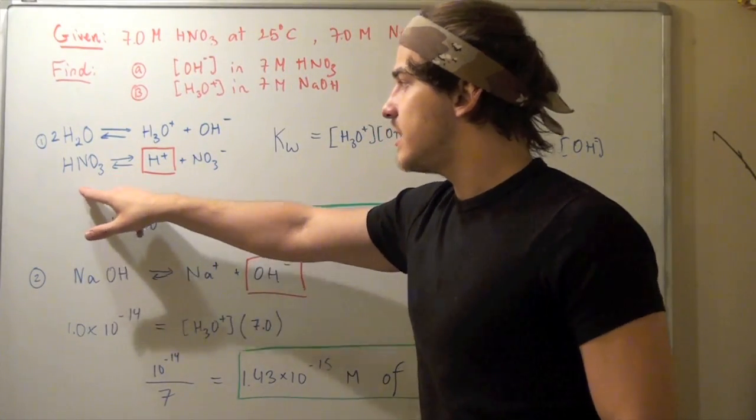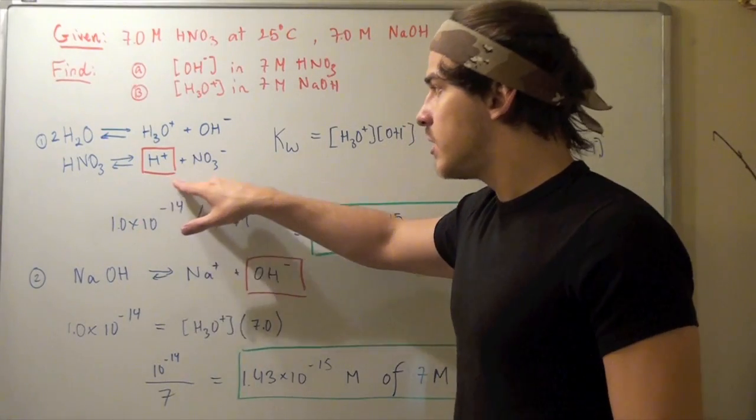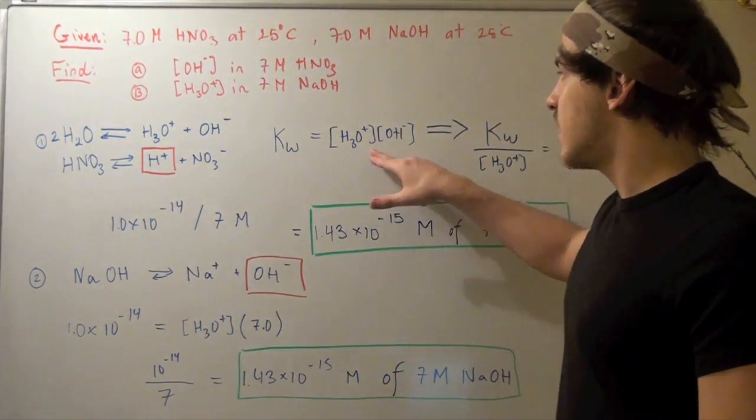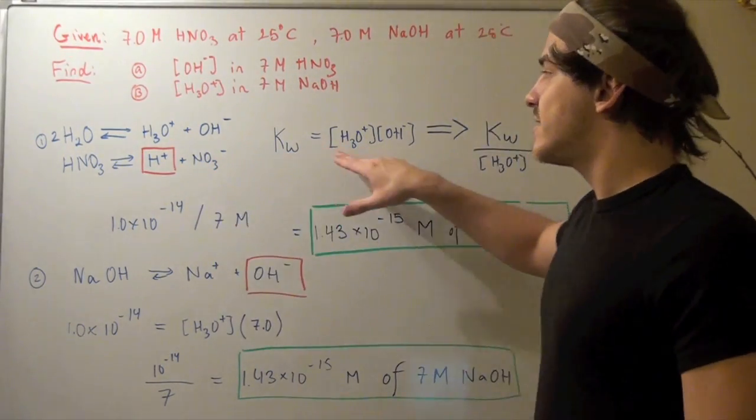And this acid dissociates into H plus and some other ion. And this H plus increases the concentration of both. In fact, H plus and H3O plus are one and the same. They're meant to represent the same thing.